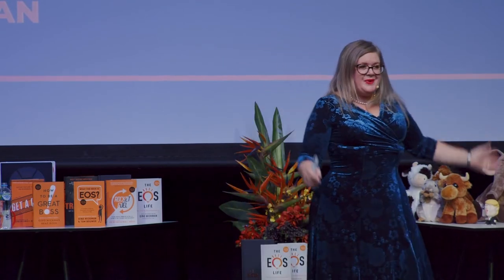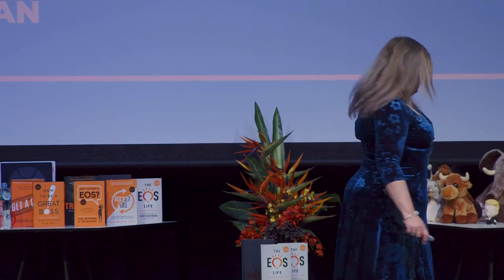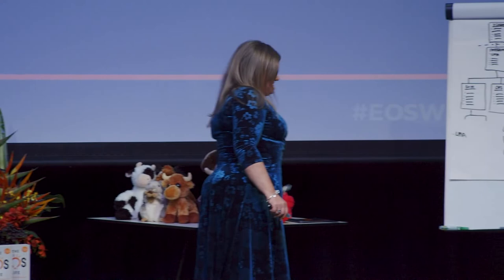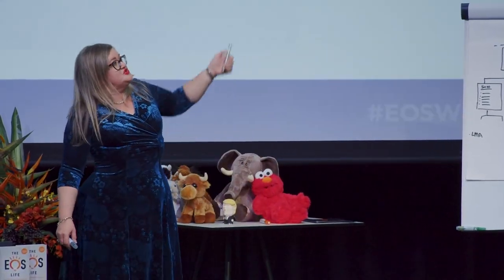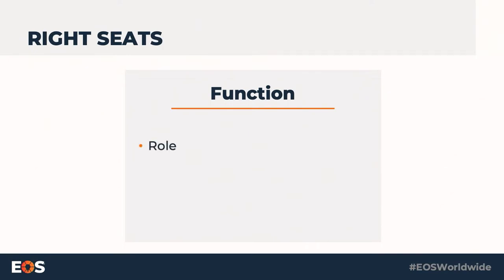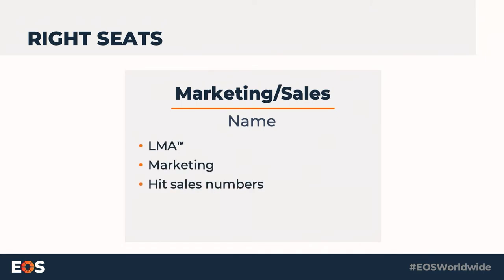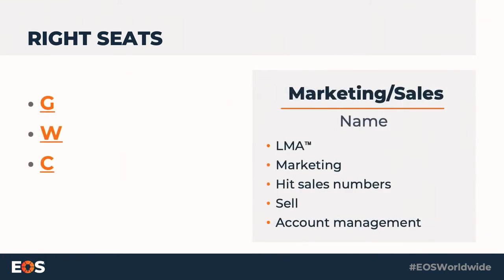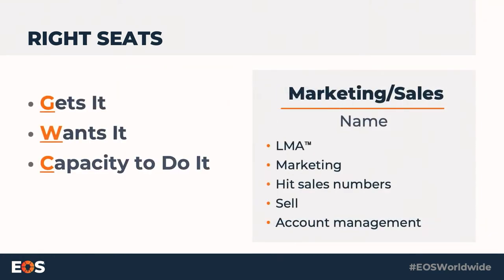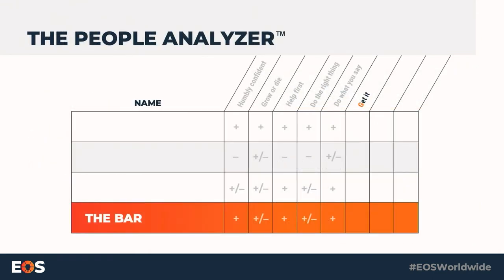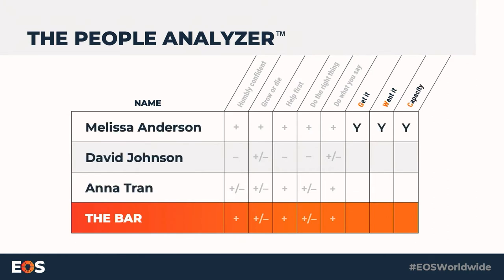We always say to them: it's not like you're fired, you've still got a job, the same salary, the same title — you just don't have a role on the leadership team. So we always go: what is the main function of the business, what are the five key roles that person has to have, and only after we've done that do we put the name in there. You have to have three yeses for GWC. You cannot have somebody who doesn't get it, doesn't want it, or doesn't have the capacity to do it — that will be a disaster for the business.